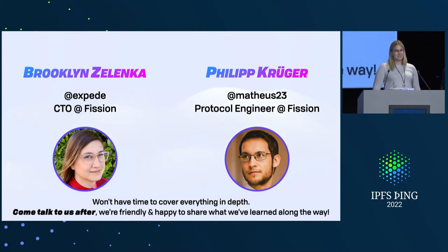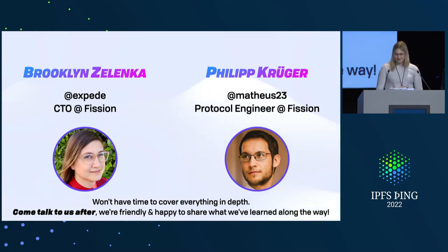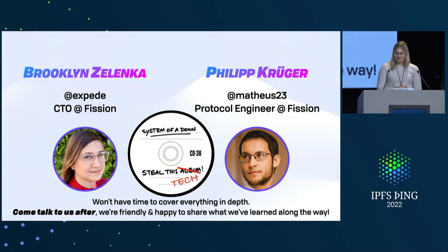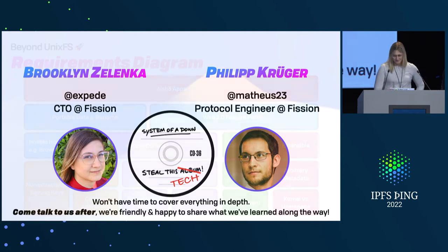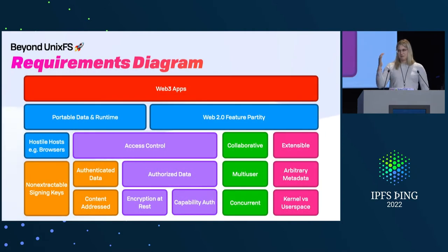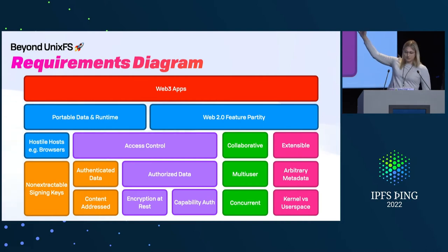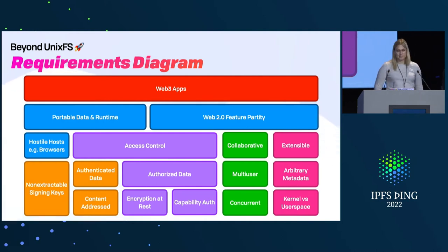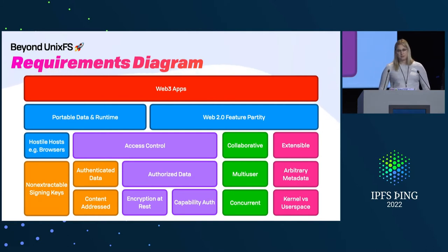We only have 15 minutes, so we won't be able to talk about everything in depth, but please do come talk to us after. We've learned a lot along the way building this, and even if you don't end up using all of WebNative, feel free to steal as many of these ideas as you like. So why build something on top of Unix FS, or sort of almost like a fork of the basic idea? We want to build Web3 apps, local-first apps, which requires things like portable data, portable runtime, and to do this practically we have to have at least feature parity with Web2, and ideally do a bunch more things in addition.